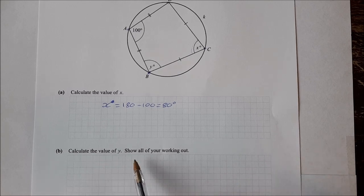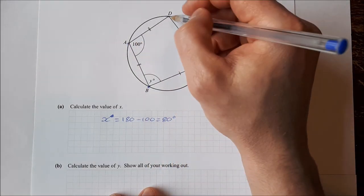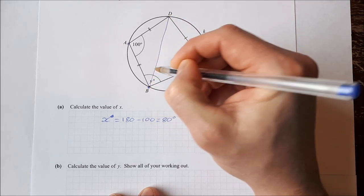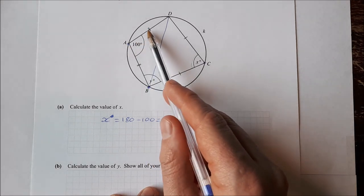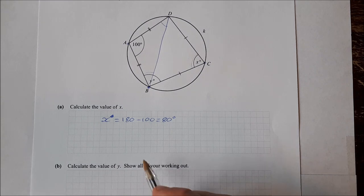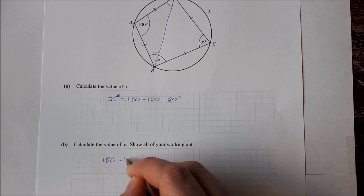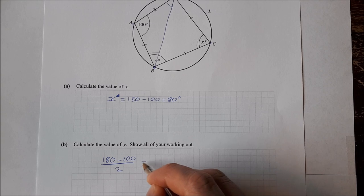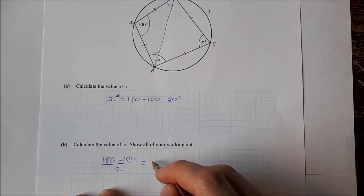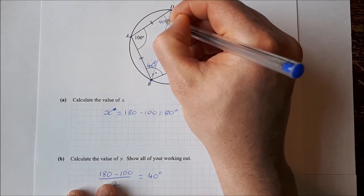Next we're asked to calculate the value of Y and to show all your working out. So for this one, the fact that this line is equal to this line is important. So if we draw a line from D to B, we end up getting a triangle here. And because this length is equal to this length, it's an isosceles triangle. So that means this angle here is equal to this angle here. Well we know that in a triangle there's 180 degrees. We already have 100. So that means these angles here would be 180 minus 100 divided by 2. 180 minus 100 is 80 divided by 2 is 40. So that means that part of the angle there is 40 degrees. Likewise that up there is 40, but we don't need that for this question.